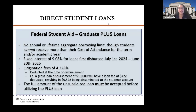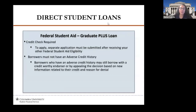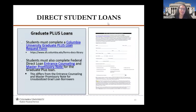It's important to note that the graduate plus loan is based on a credit check. If you do have an adverse credit history, you can submit an appeal to see if that credit check will be overturned, or you also have the option to apply with an endorser. Unlike the unsubsidized graduate loan — where once you complete the FAFSA and accept it in your student portal, that's all you need to do — the grad plus loan requires a separate application because it's based on a credit check. We have an online application which makes it very easy to submit electronically.